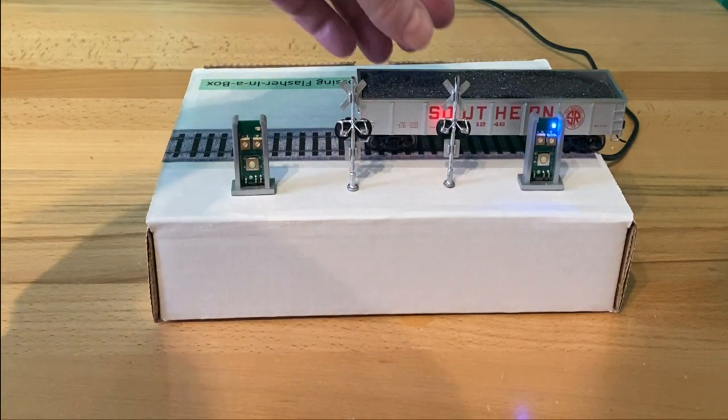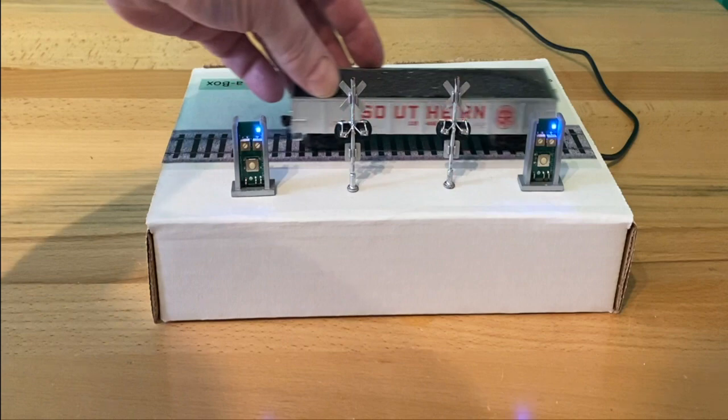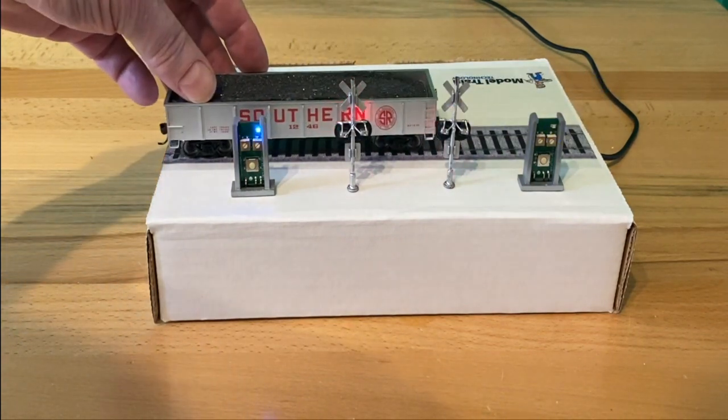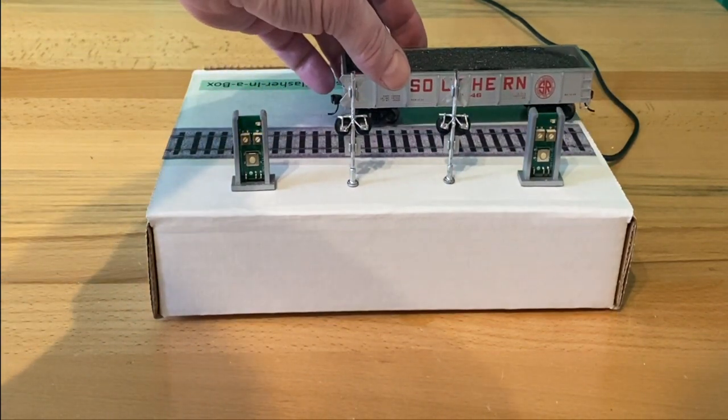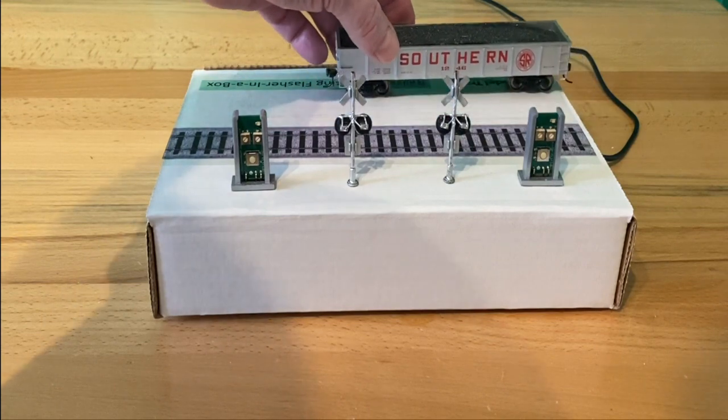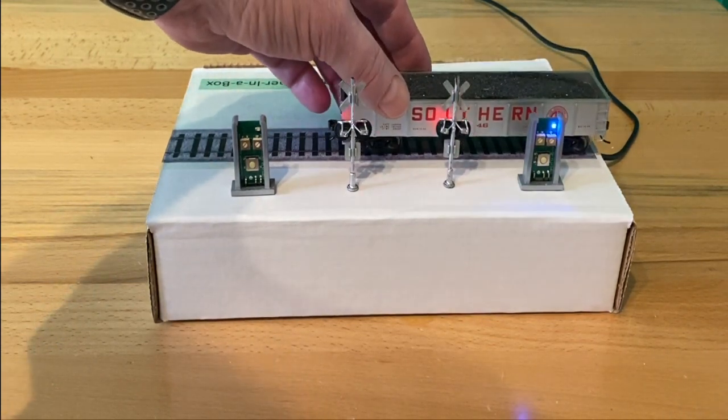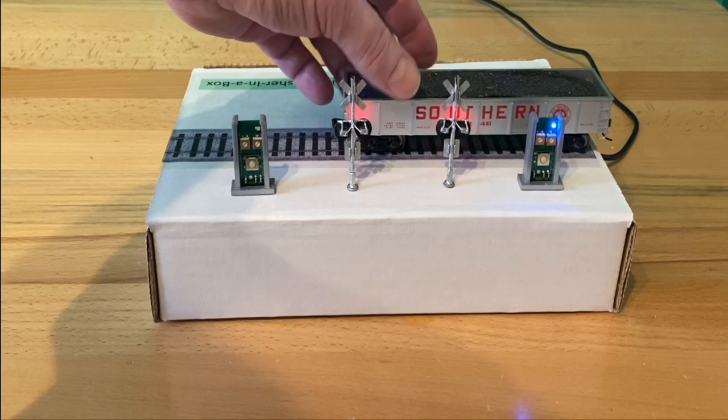And there you go. So now it's set to that exact distance. So out here, it doesn't trip it. You see that? Nothing's tripping it. But once it gets inside the train on the rails, it'll trip it.